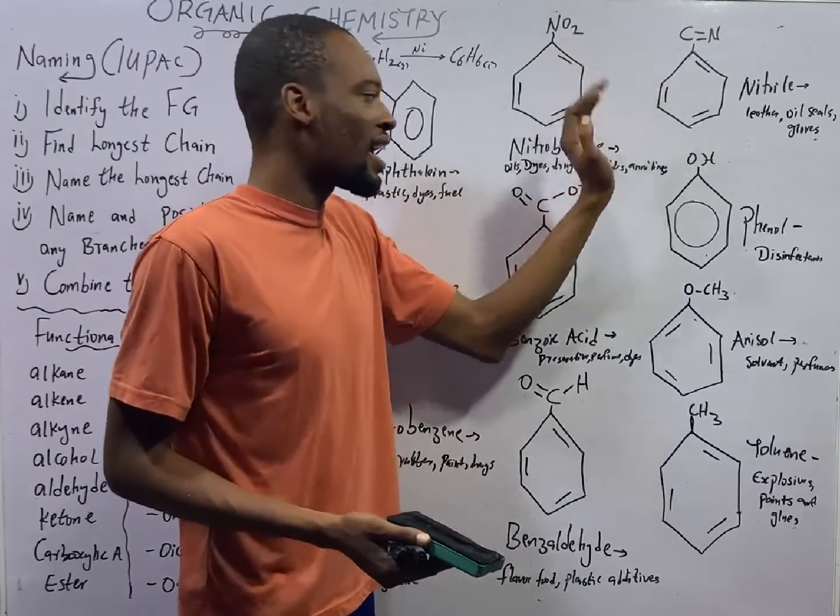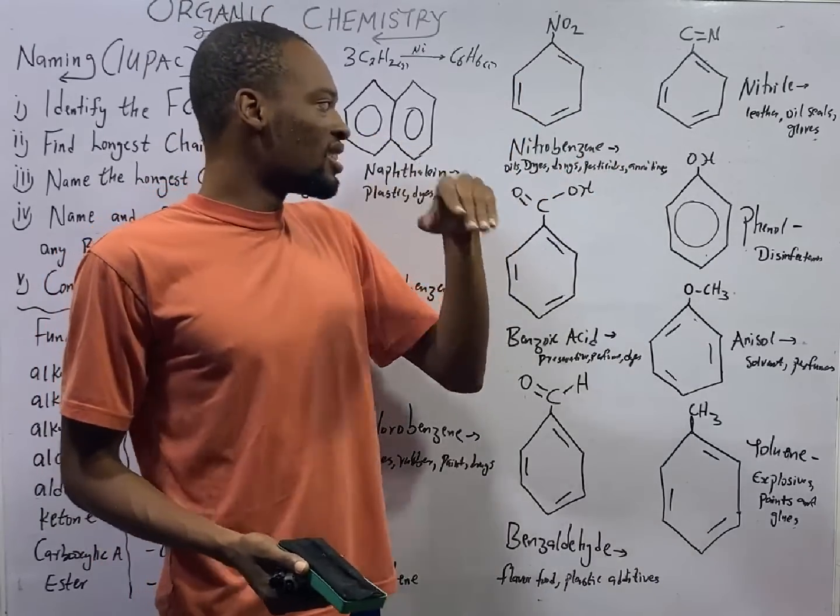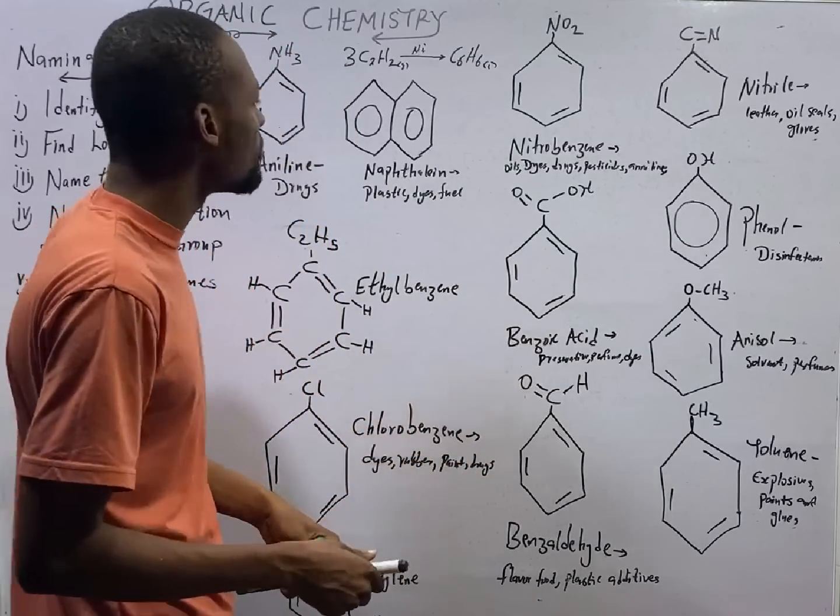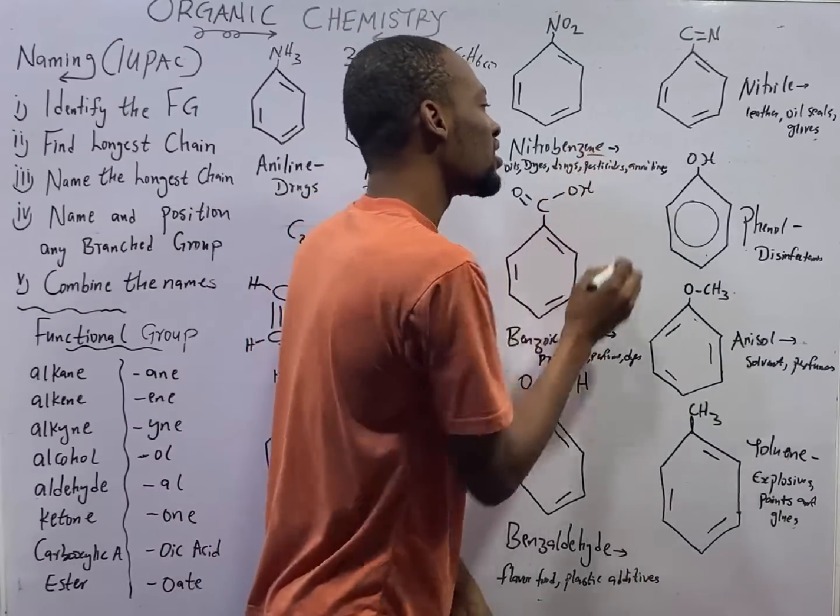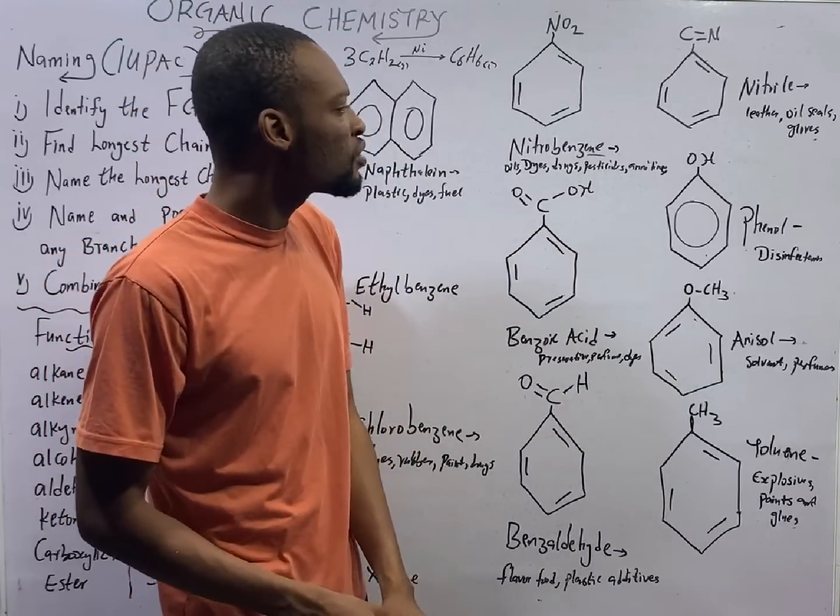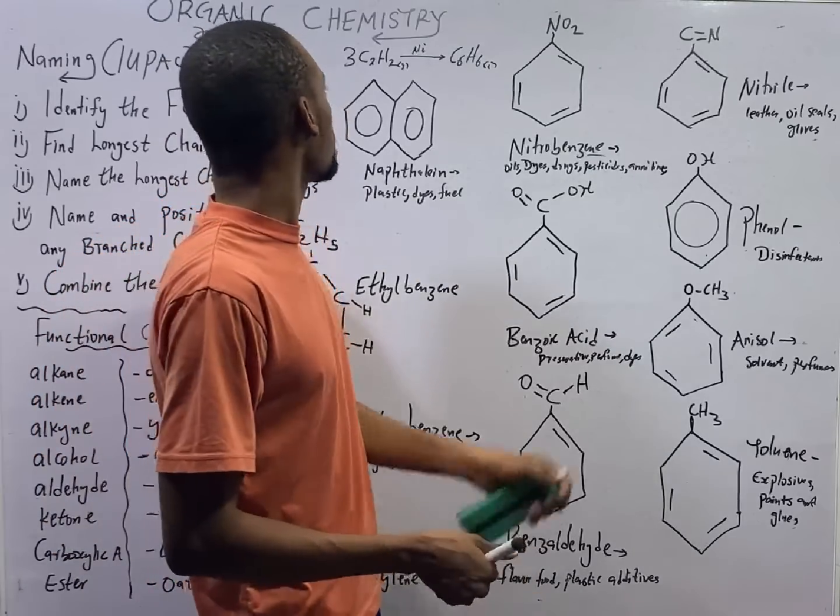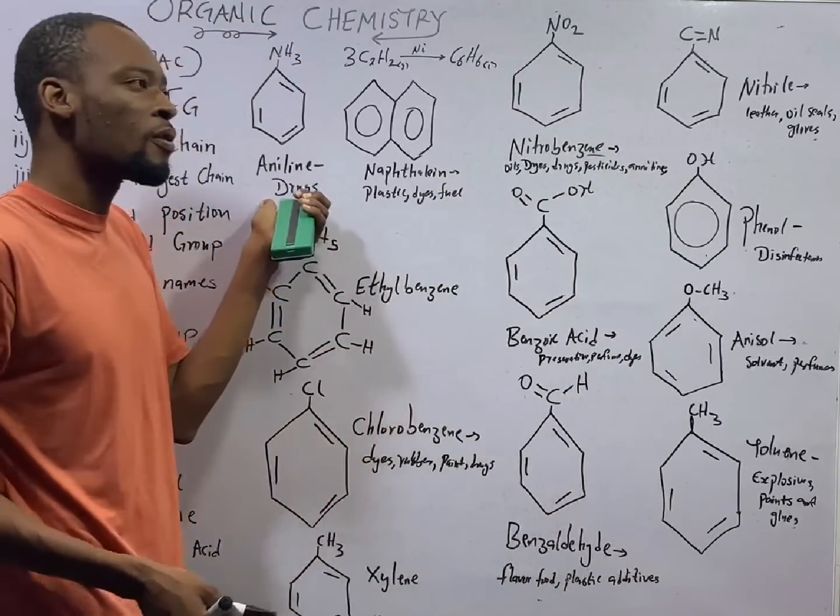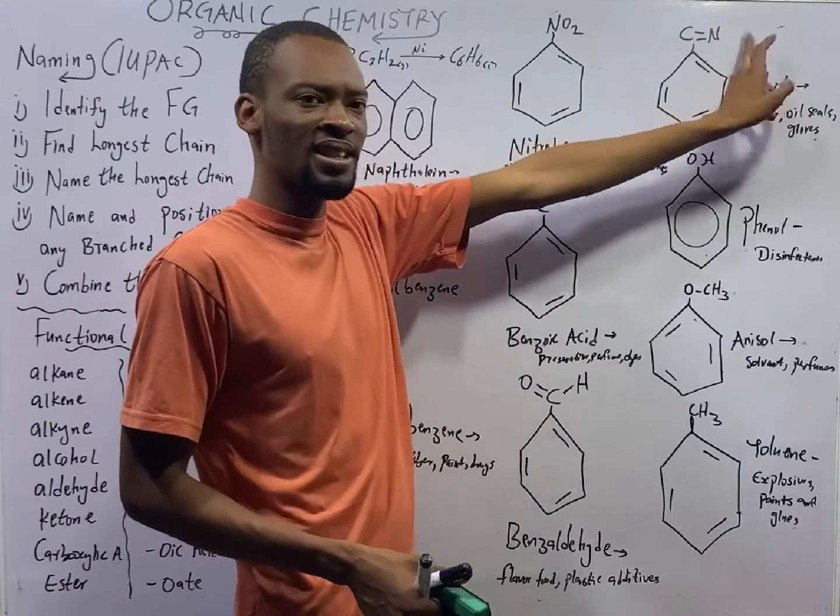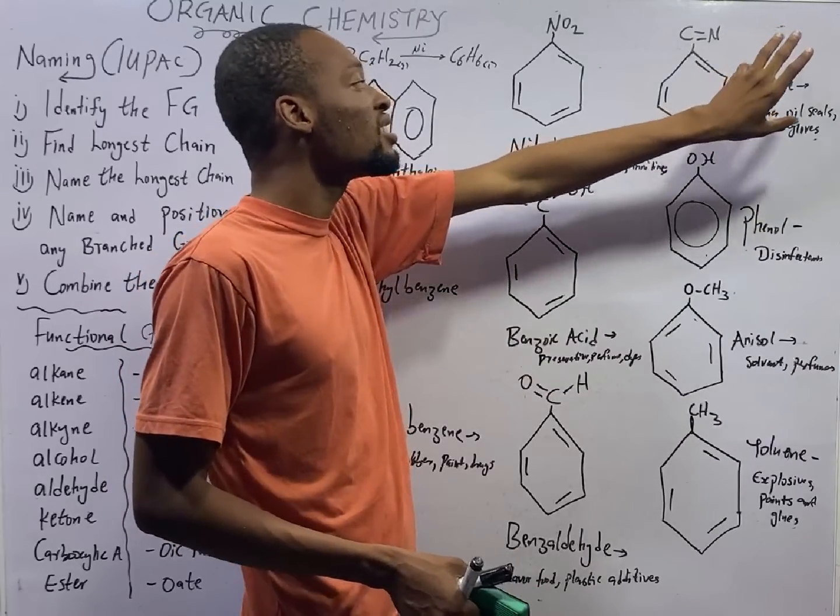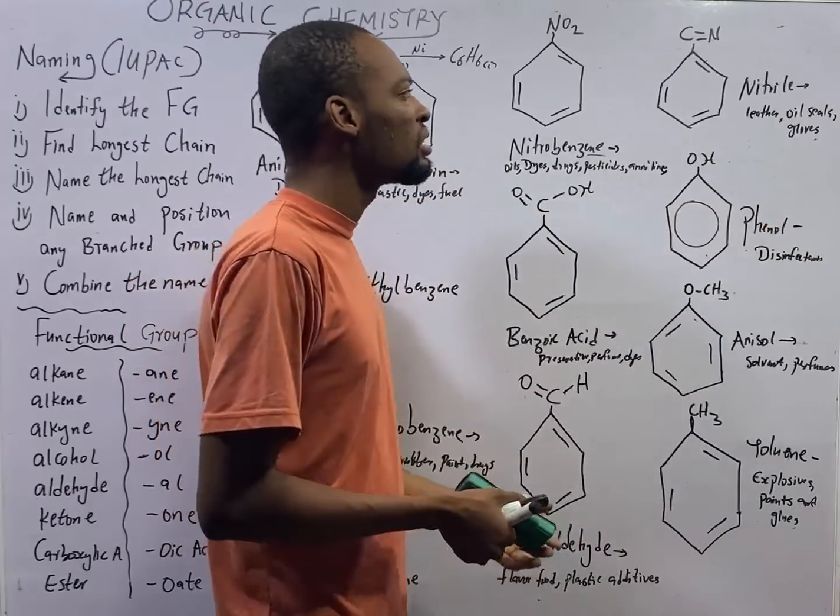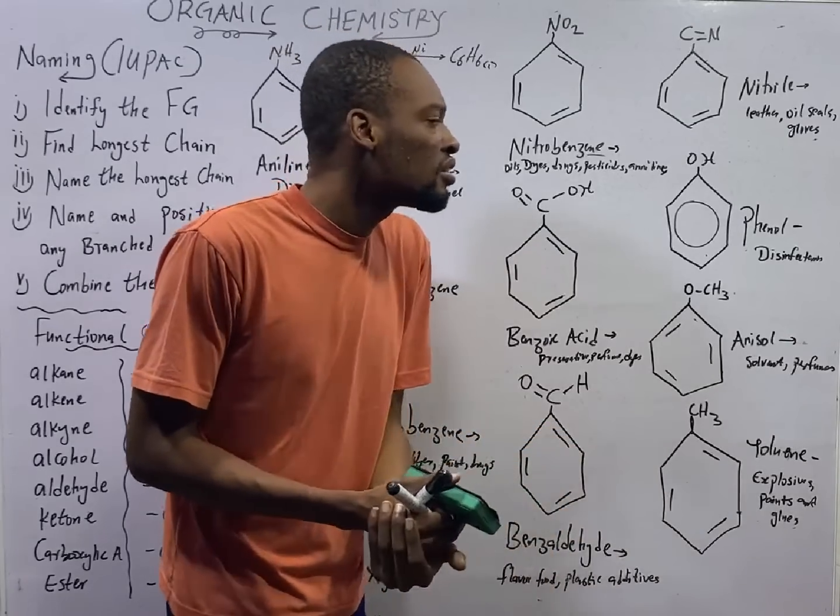When NO2 is added to benzene, the name becomes nitrobenzene. Even from the name benzene, you see that it ends in E-N-E to show that the functional group is double bond. Nitrobenzene is used for making oils, drugs, pesticides, and you can use nitrobenzene to form or to produce aniline. If you add nitrile, C double bond to N is the nitrile functional group. Once you get to benzene, you get benzonitrile or nitrile in simple terms. Oil seals, gloves, you can use that to make it.